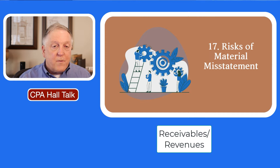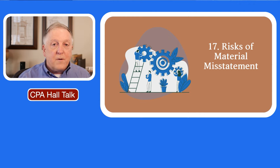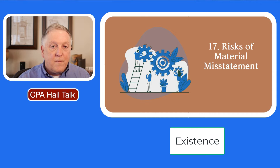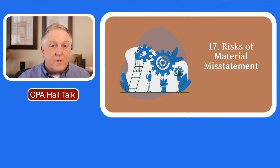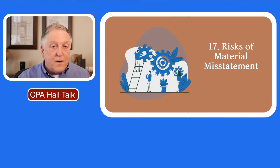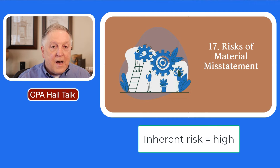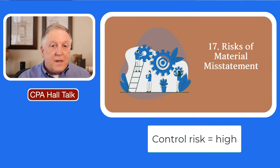Think about the receivables and revenues area as we have a short discussion, and I give some illustrations about assertions in that transaction cycle. Think about receivables — let's look at the existence assertion, and let's say the inherent risk for that assertion is high. Suppose that in this transaction cycle there's a high volume of activity, and the ASC 606 criteria in GAAP for revenue recognition and receivables is complex, as it quite often is. So we're going to assess the inherent risk for the existence assertion at high, and then our control risk — let's say it's also high.